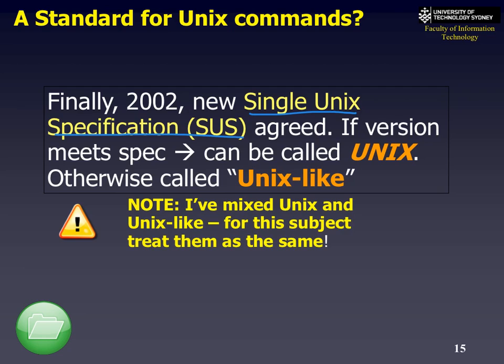In 2002, they finally got together and agreed on a non-licensed thing called the Single Unix Specification, known as SUS. If your operating system met that specification, it could be called Unix. If not, Unix-like. So Linux technically is actually a Unix-like operating system—but as far as we're concerned, it's the same.